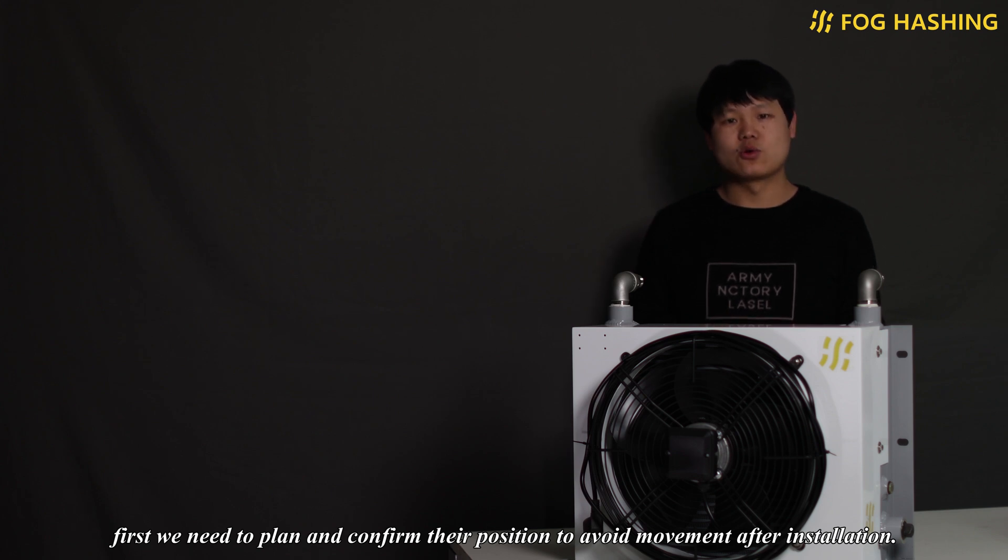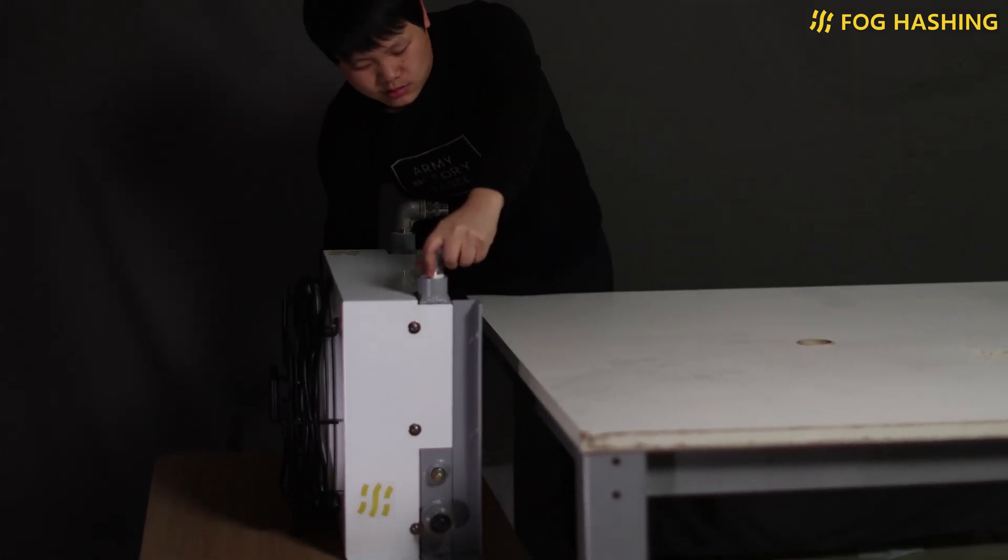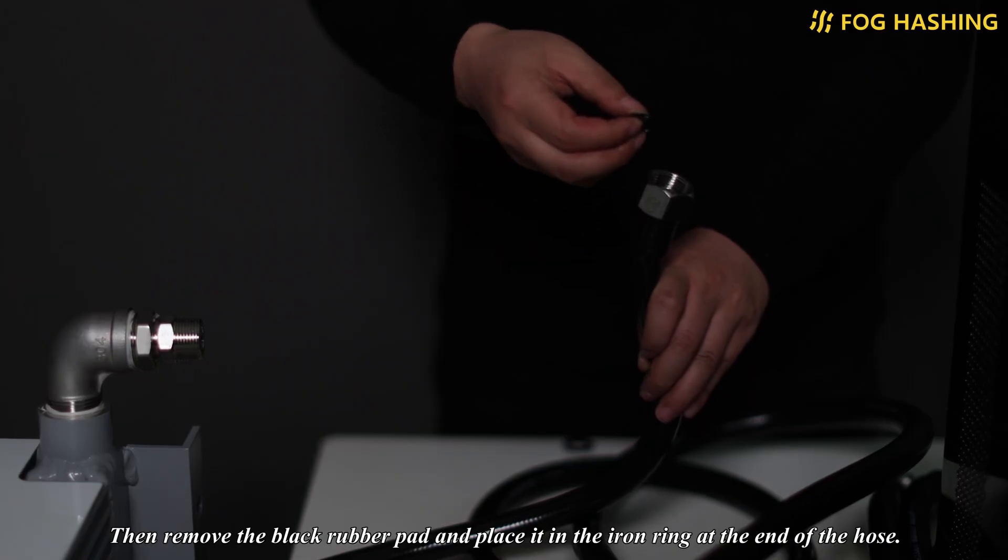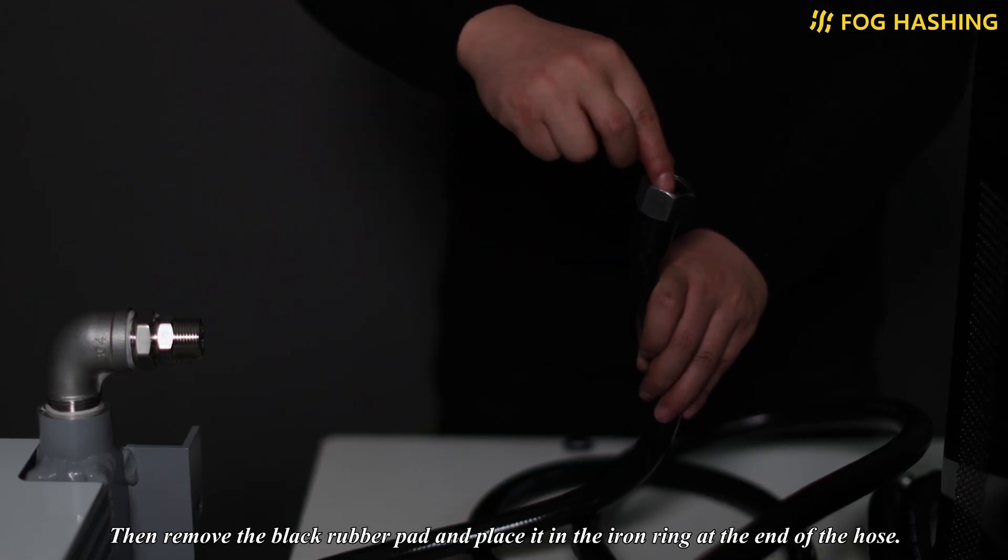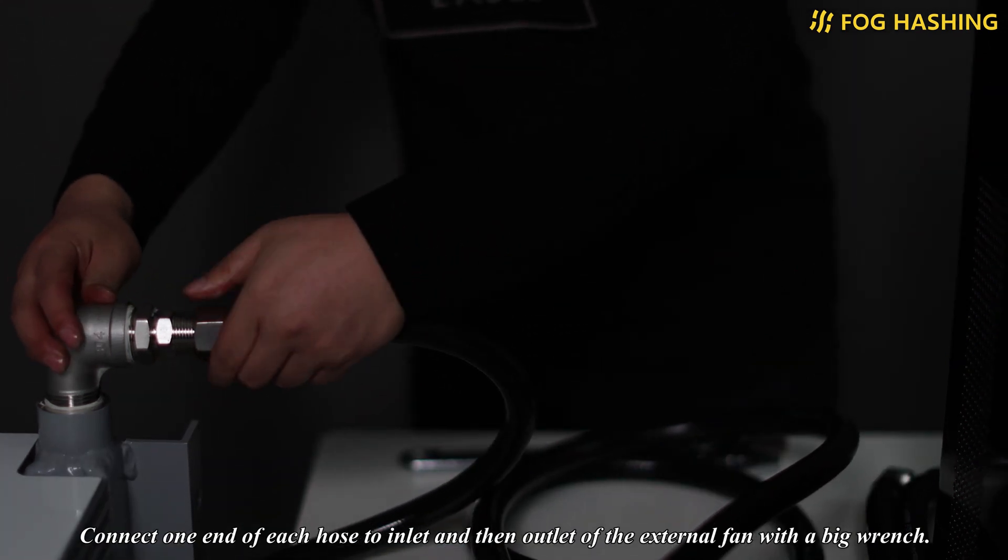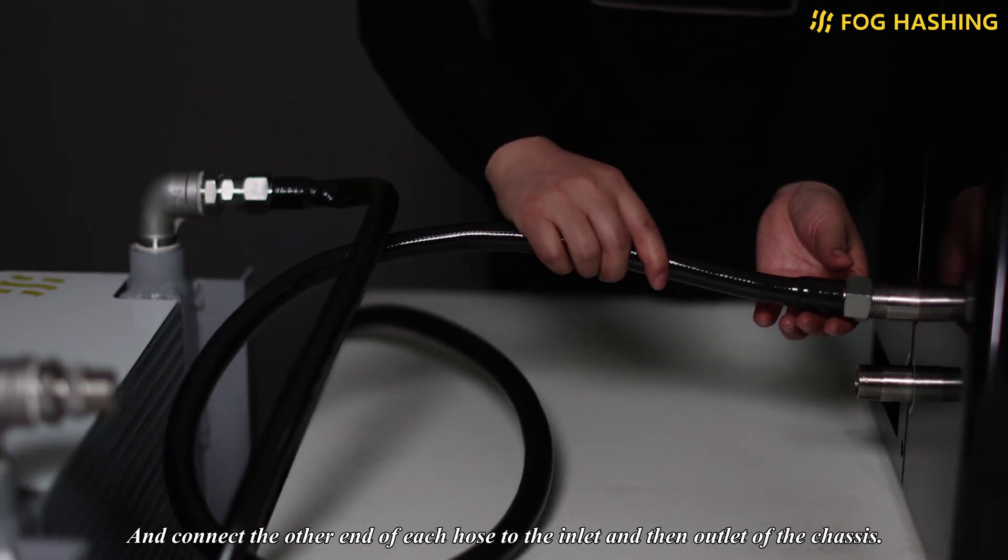Next we must put the fan below the level of the chassis. Then remove the black rubber pad and place it in the iron ring at the end of the hose. Connect one end of each hose to the inlet and then outlet of the external fan with a wrench, and connect the other end of each hose to the inlet and then outlet of the chassis.